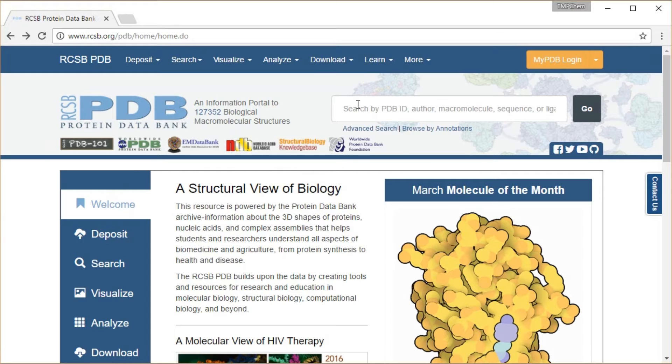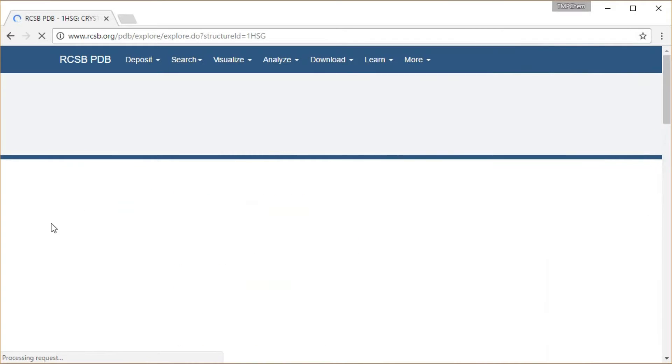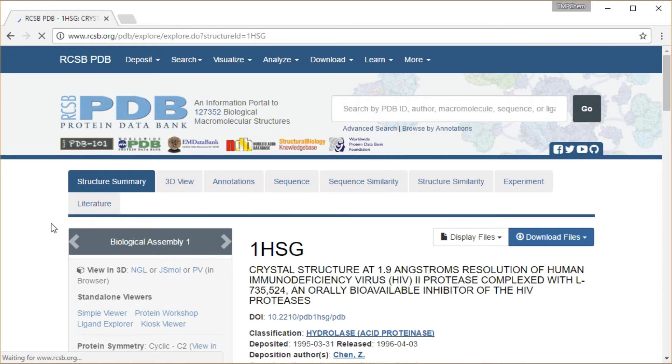On here you can search for various PDB structures. They usually have four letter abbreviations like 1HSG. So I'm going to go to that one.